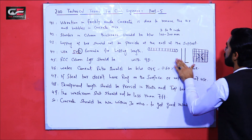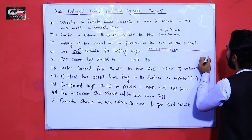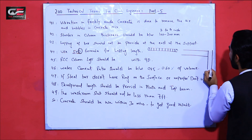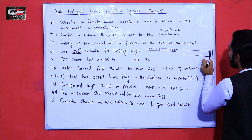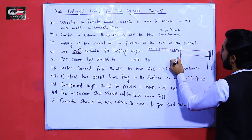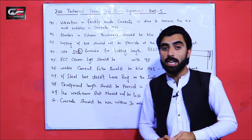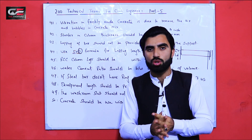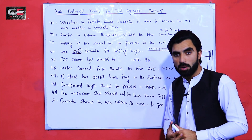Term number 48 is development length (Ld). Development length should be provided in top beams and also in plinth beams. You can see: this is a steel bar and here we have a column — this extension into the beam is called development length. Development length must be provided in both top beams and plinth beams, because without it a good bond between steel and concrete cannot be achieved and slipping will occur. This is a very important topic.